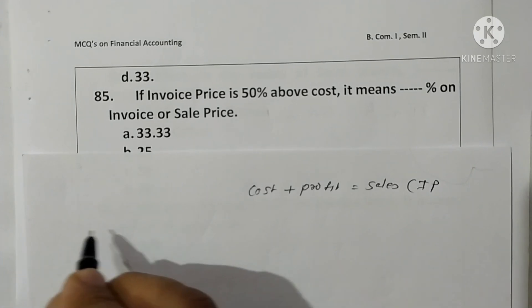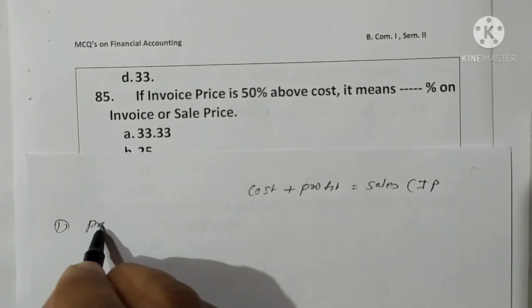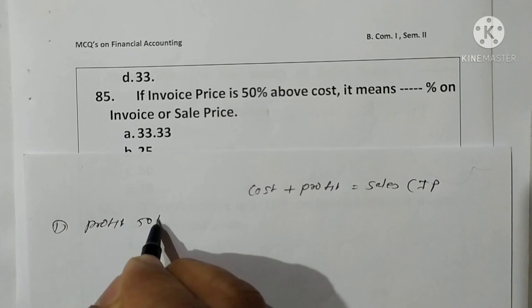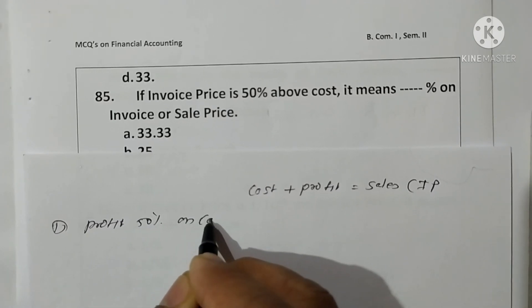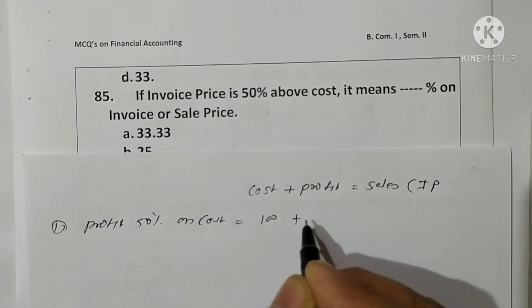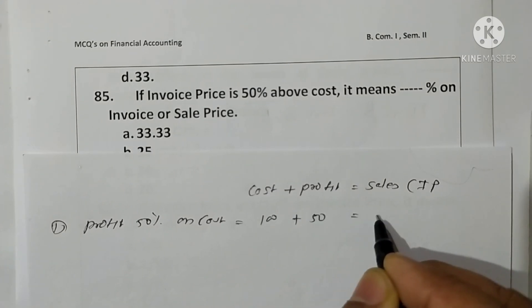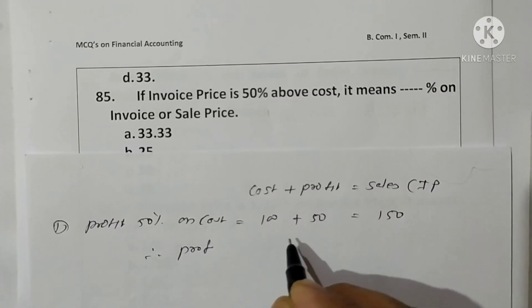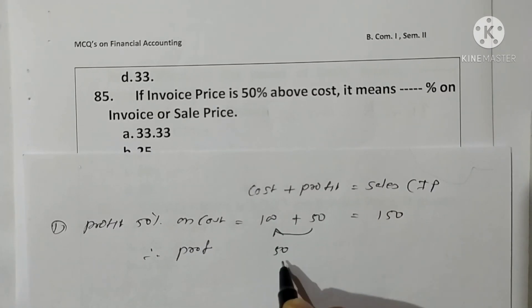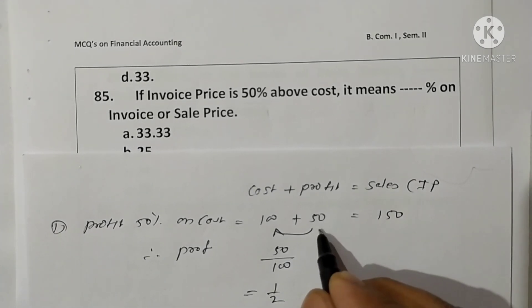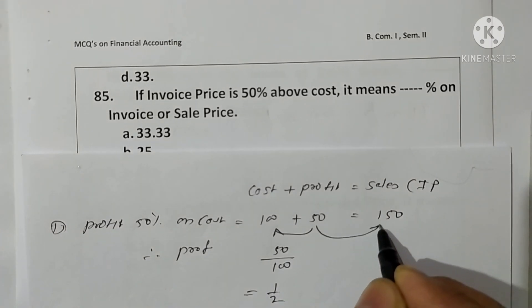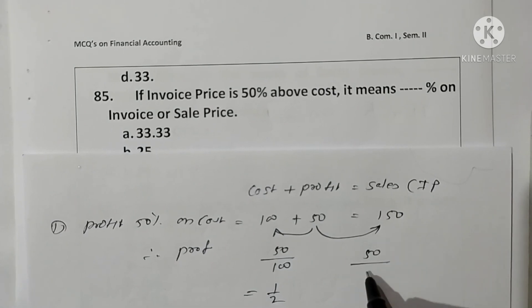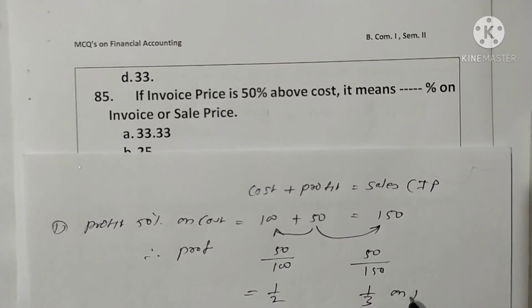Suppose profit is 50% on cost price. It means cost is 100, profit is rupees 50, and sale price is rupees 150. Therefore, profit percentage on cost is 50 out of 100, which is one-half on cost price. If profit percentage on sale price, it is 50 upon 150, which comes to one-third on invoice price.